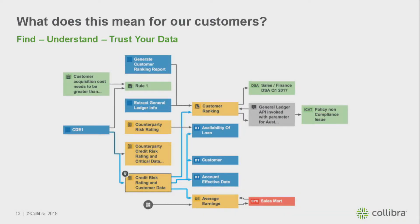What does this mean for customers? What they see within our system is something like a snapshot of one part of this graph. Centered on a data set, for example, it gives ideas of different business terms related to it, other data sets related to it, certain rules, policies, and data sharing agreements — all things that give more and more meaning to what this data set actually is and what it's used for.